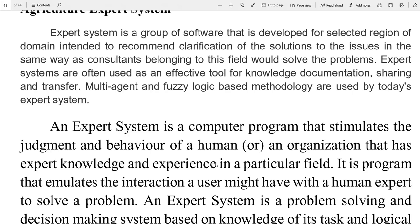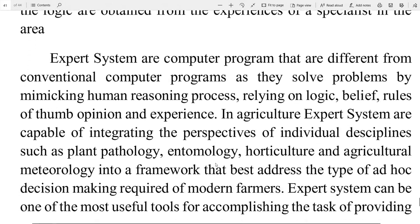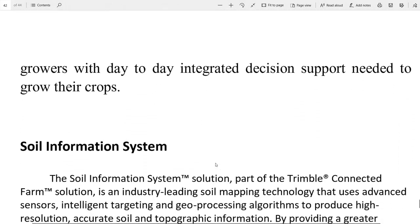Phir database design aur creation dekha, database ka agriculture field mein use dekha, objective, benefit to government, benefit to farmer. Phir geospatial technology padha — bhoo sthanik jo use ki jati hai agriculture information system ke liye — aur uske types: remote sensing, geographic information system, global positioning system, internet mapping technologies jismein Google Maps liya. Decision support system dekha — jo decision delvata hai, support karta hai farmers ko. Agriculture expert system — jo expertise way se agriculture field ko madad karta hai. Soil information system — soil ke baare mein detail information deta hai.